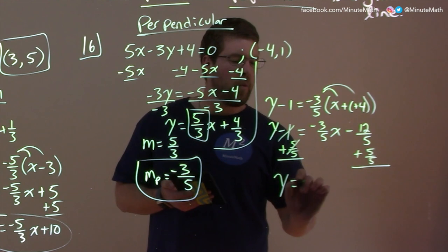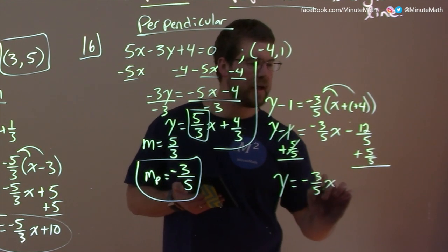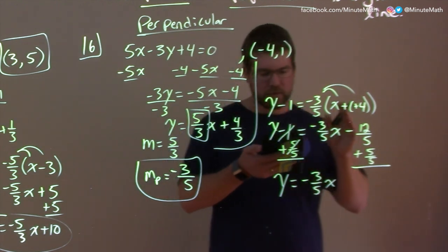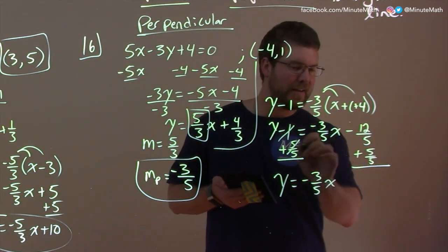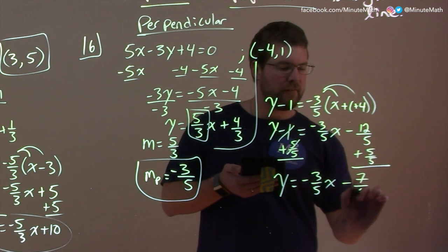They cancel. y is by itself, y equals negative 3 fifths x, and negative 12 fifths plus 5 fifths. That's why I kind of did that, so it's easy to add the fraction, is a minus 7 fifths.